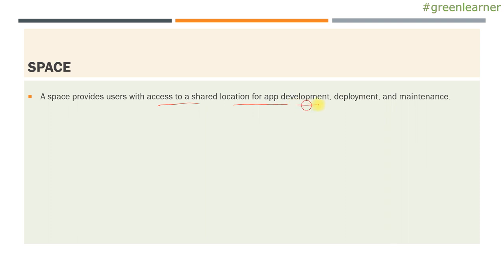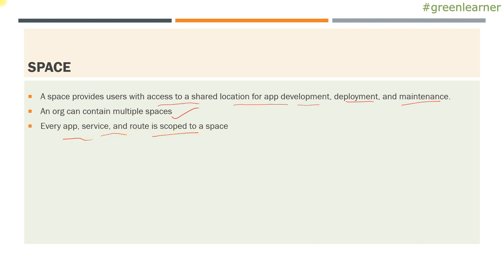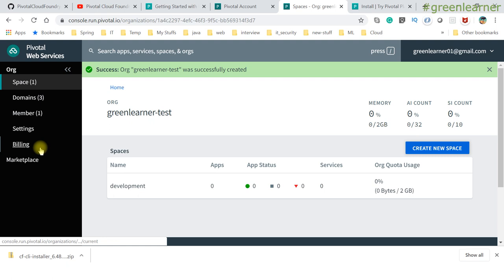A space provides users with access to a shared location for app development, deployment, and maintenance. Every app, service, and route is scoped to a space. Org managers can set quotas on things like paid services available to a space, number of app instances, service keys, number of routes, reserved route ports, and memory used across or within the space.